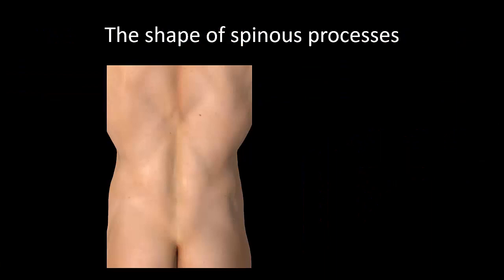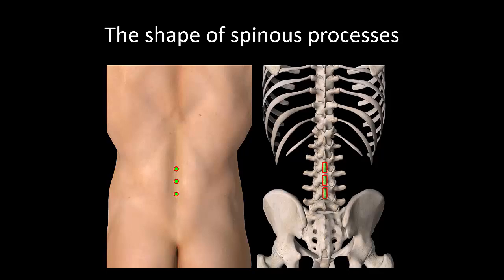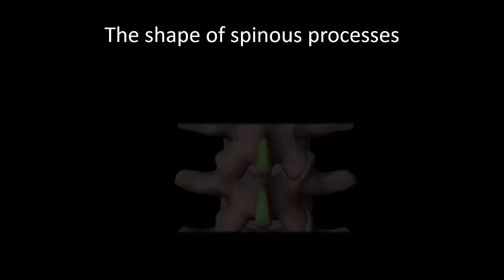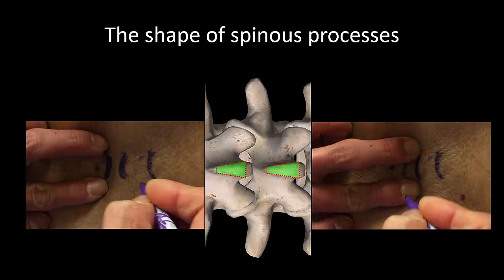Because the spinous processes are such an important landmark, it must be realized that the tips of spinous processes aren't neat round circles — they have a definite height and are more like rectangles. More than that, they are not uniformly wide at their upper and lower aspects, being shaped more like a pyramid. As the paraspinous approach involves inserting the needle alongside the spinous process, it is important to appreciate this transverse width. This is yet another reason why the two-finger palpation technique is so valuable.